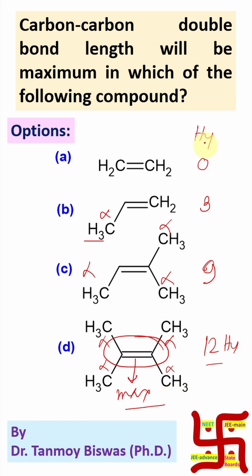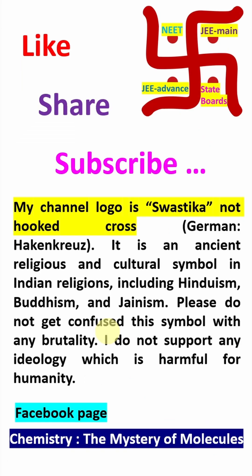So, this information you should remember and you have to check how many hyperconjugation possible for each of the alkyl. And very quickly, you can come to the right answer. I mean option D. So, this is the overall discussion. Thanks for watching.